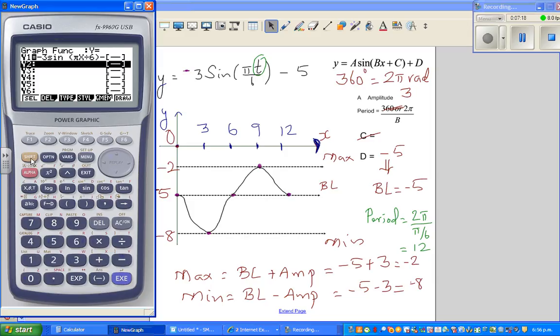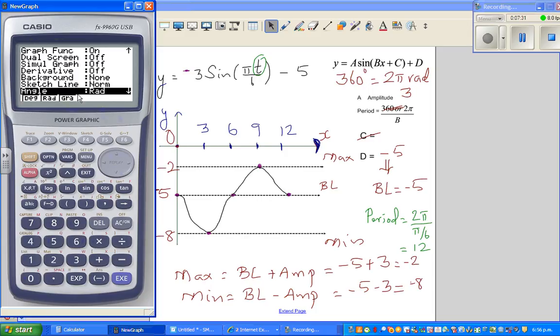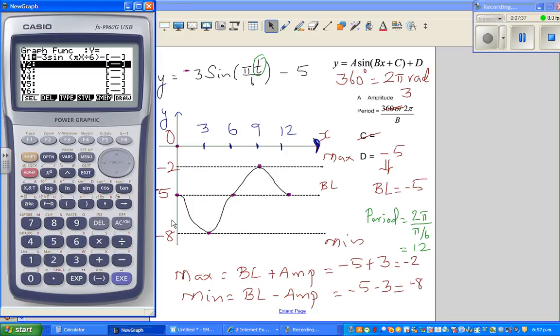Before I graph it, I have to check whether it's in radians. Shift, setup, go to setup and check, because you're working in radians. Your calculator has to be set on radians. The next is you have to have an appropriate scale. On x-axis, we want from 0 to 12.